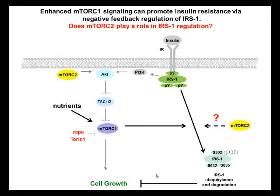IRS1 is a critical adapter protein that transfers signals from the insulin receptor to downstream signals including PI3K. When phosphorylated at tyrosine residues, IRS1 can bind signaling proteins such as PI3K, which triggers a cascade of signaling events culminating in cell growth. On the other hand, serine phosphorylation of IRS1 by mTORC1 and other cell signaling protein kinases is a major mode of downregulating IRS1 signals. Previous studies have shown that rapamycin treatment, which inhibits mTORC1, can prolong insulin signaling due to inhibition of IRS1 serine phosphorylation.